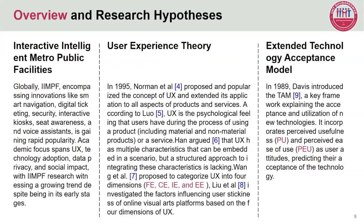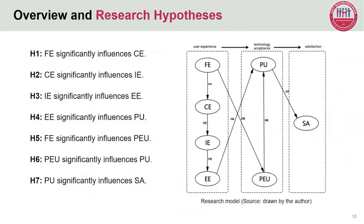We now present our theoretical foundations and research hypotheses. Our theoretical foundations include interactive intelligent Metro public facilities, user experience theory, and the extended technology acceptance model. The research model includes seven hypotheses: H1, Bay significantly influences CE; H2, CE significantly influences E; H3, HE significantly influences E; H4, HE significantly influences usability; H5, FE significantly influences usability; H6, usability significantly influences satisfaction; and H7, usability significantly influences SAW.